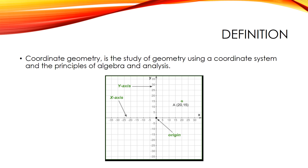It has two scales called the x-axis and y-axis at right angles to each other. The plural of axis is axes. A point's location on the plane is given by two numbers — one that tells where it is on the x-axis and another which tells where it is on the y-axis. Together, they define a single, unique position on the plane.